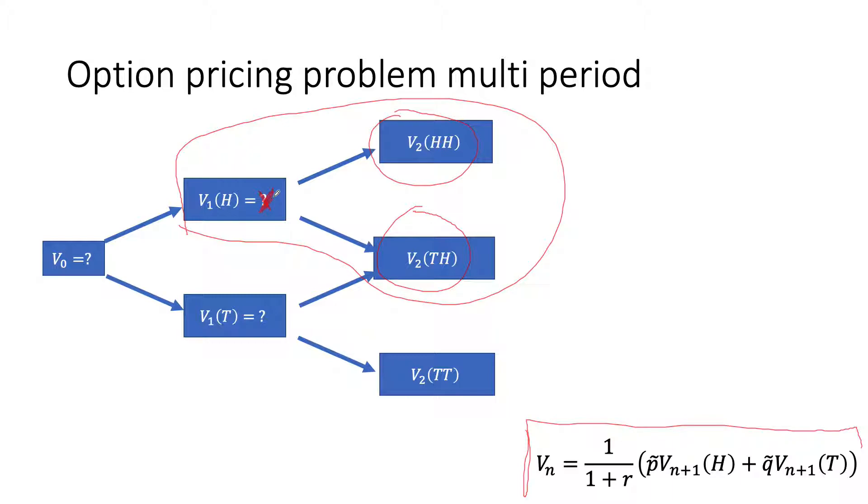Then we can come and look at this guy also. This is also a one-period binomial tree. We know this V2TH, we know this V2TT. These are just the payoff of the option at expiration. Those are well-known. Again, just apply this formula here and we can find the price here, V1T. Let's call this Y.